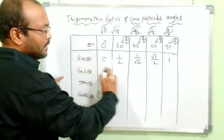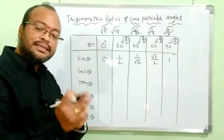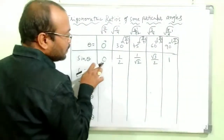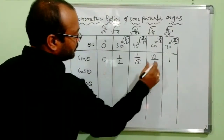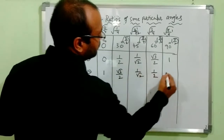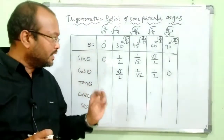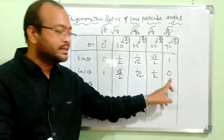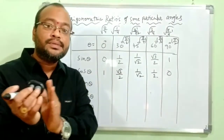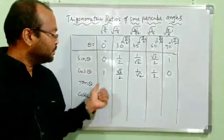Next, cos. Since sine and cosine are co-functions, meaning sin(90° - θ) = cos θ and cos(90° - θ) = sin θ, the values change at 90°. So the cos values are just the reverse of the sin values: cos 0° = 1, cos 30° = √3/2, cos 45° = 1/√2, cos 60° = 1/2, and cos 90° = 0. These angle pairs — like 0° and 90°, 30° and 60° — are complementary angles that sum to 90°.